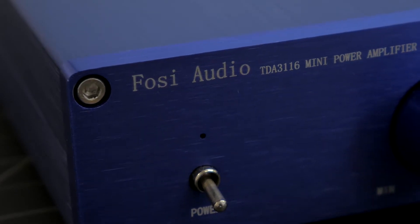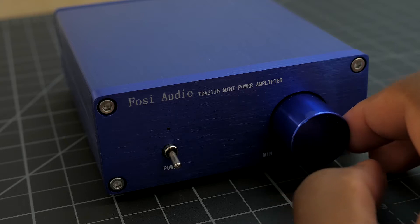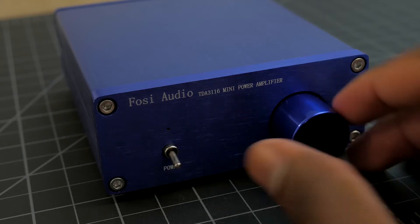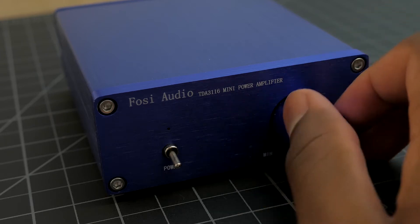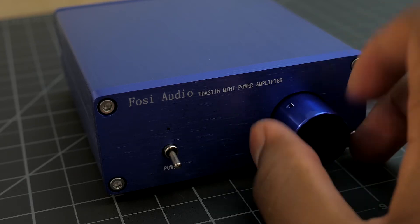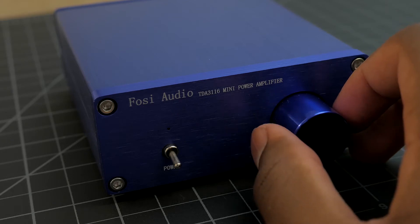On the front we have the brand name, which includes the IC number they use to drive the amplifier, as well as a power switch and a volume knob. The knob has a huge degree of rotation, which is awesome because it lets you really dial in your volume. There's also a power indication LED.